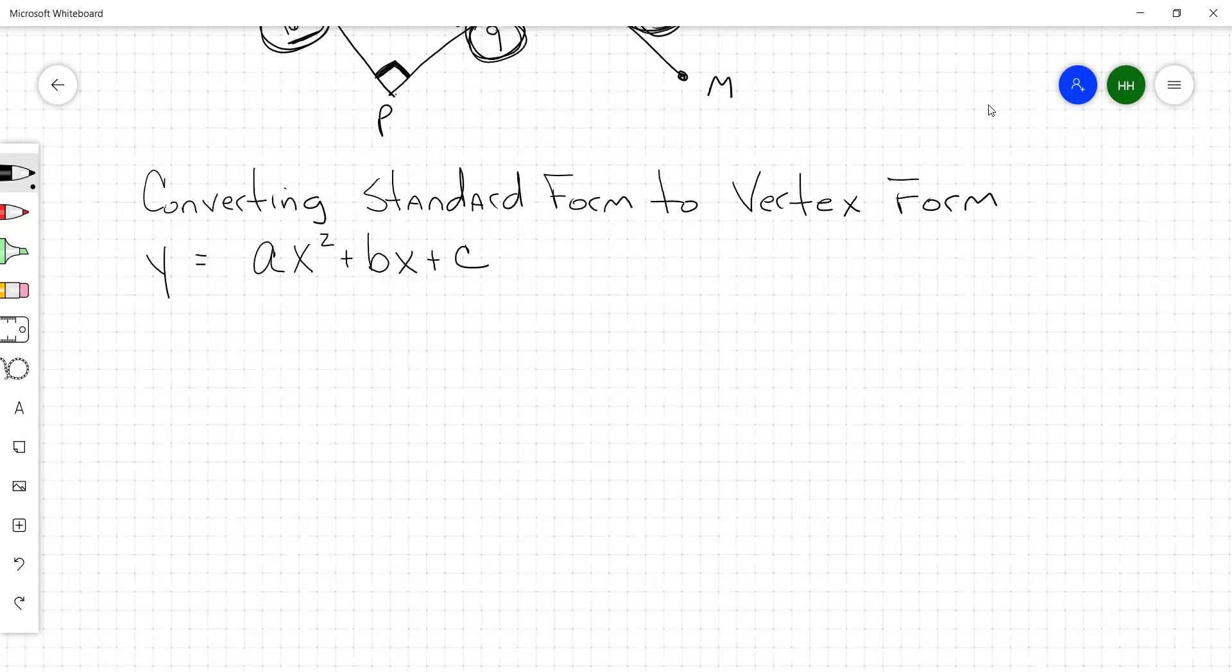Vertex form, we talked about that on Monday: a times (x minus h)² plus k.